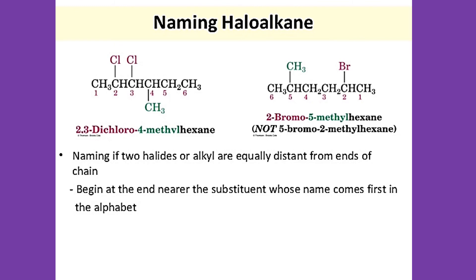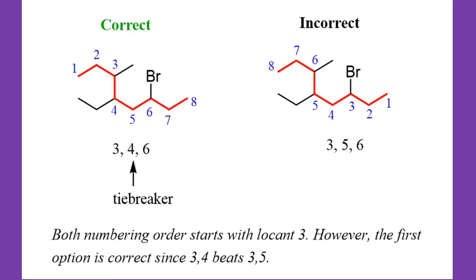On another example, the correct name should be 2-bromo-5-methylhexane, not 5-bromo-2-methylhexane. In the line form, both numbering orders start with carbon number 3; however, the first option is correct since alkyls are located on carbon numbers 3 and 4, which gives lower locants than 3 and 5, even though there is a halide on carbon number 3.